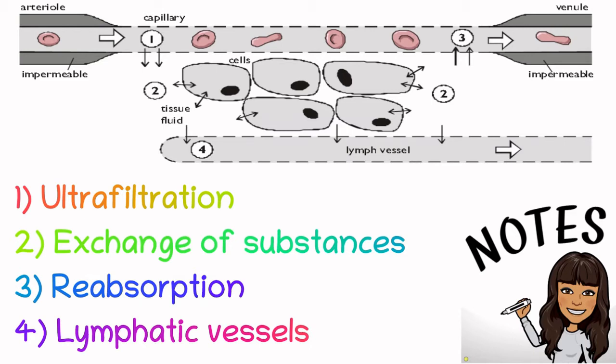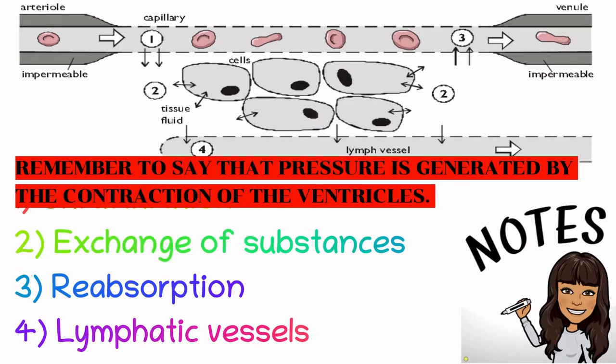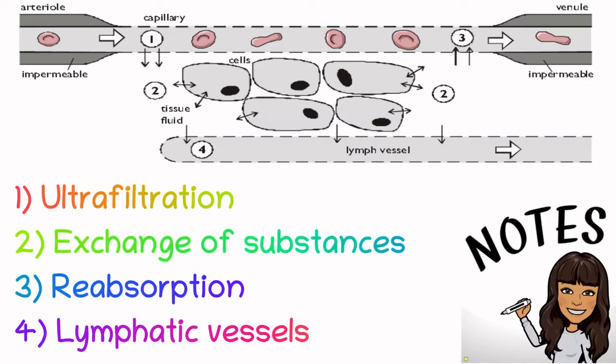There are two forces that affect the exchange of tissue fluid. The first is hydrostatic pressure, generated by the pumping action of the heart, which pushes water out of the capillary to form tissue fluid. The second force is water potential: as water leaks out of the capillary, the water potential inside is lowered, and that negative water potential at the venule end pulls the tissue fluid back into the capillary by osmosis.